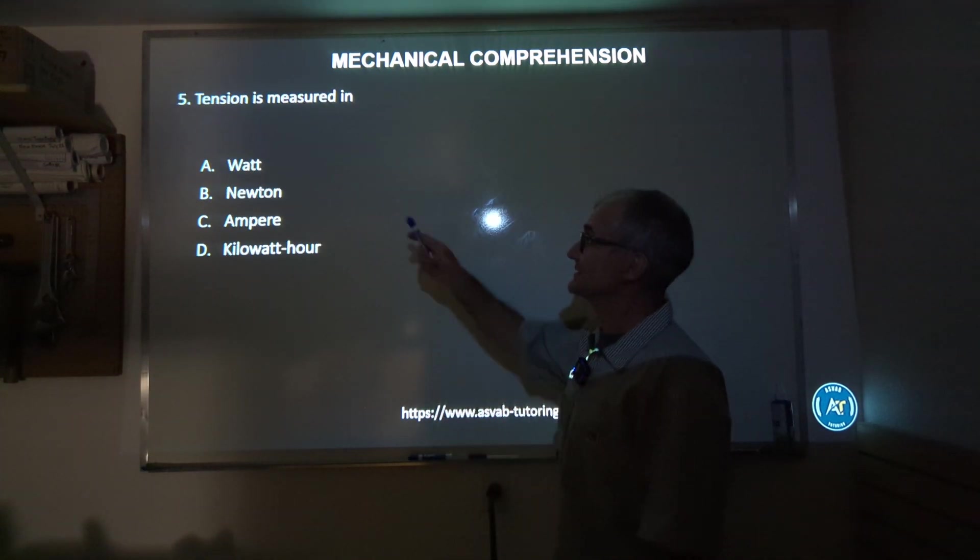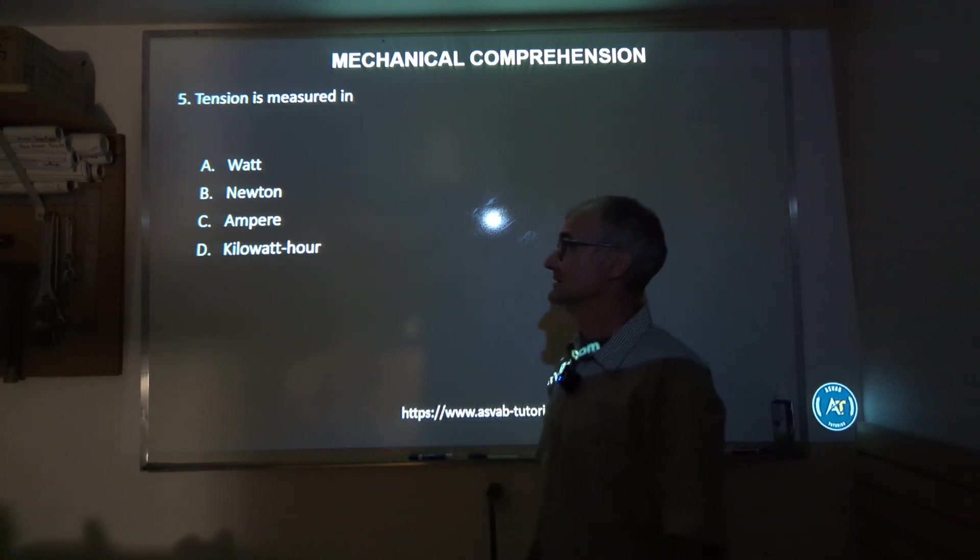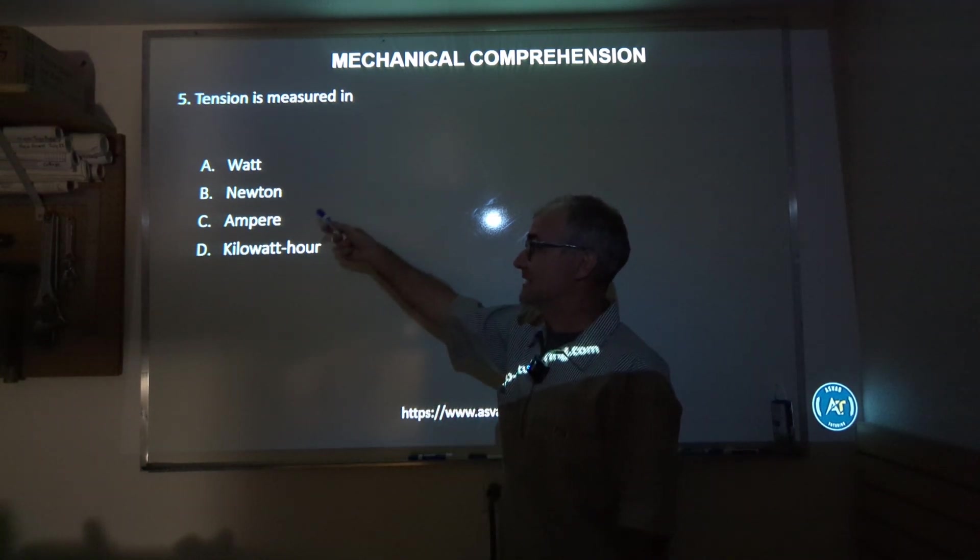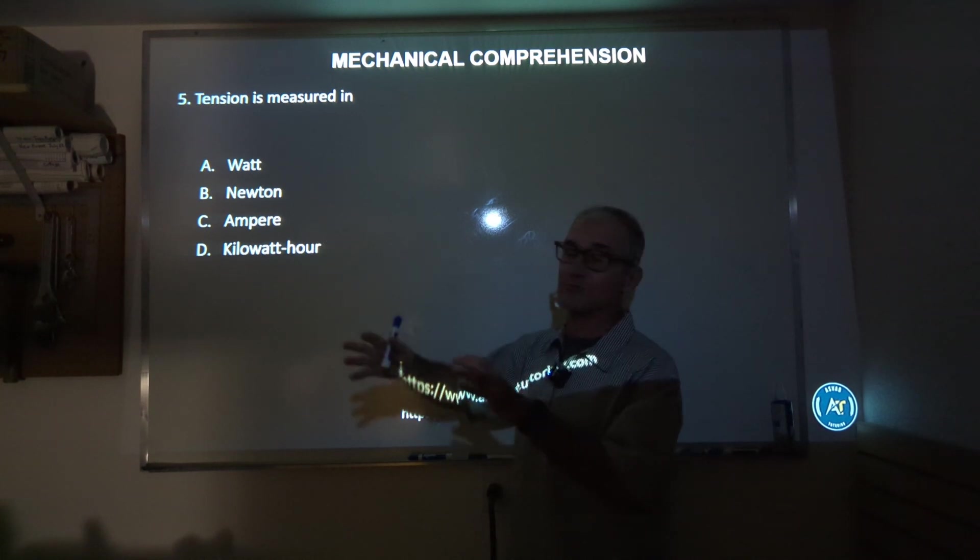Number five: tension is measured in watts, newtons, amps, or kilowatt hours. Tension is a force. It has to do with Newton physics. So the correct answer is newtons. Those are the units you're going to measure tension in. Watts, amps, and kilowatt hours are all electrical, not related to forces.